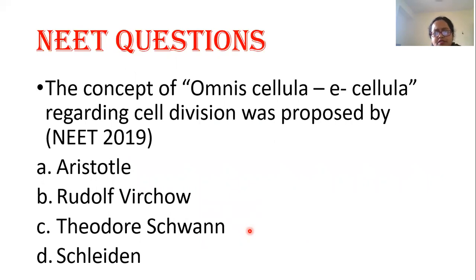Now the question: the concept of 'omnis cellula e cellula' regarding cell division was posed by — Aristotle, Rudolf Virchow, Theodor Schwann, or Schleiden? The correct answer is Rudolf Virchow. So that is all about cell theory. In the next lecture, I will talk about the prokaryotic cell. For video lectures in biology, please do subscribe and like my channel. Thank you.